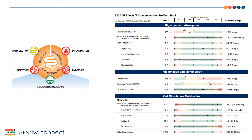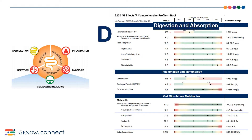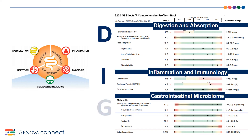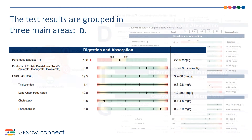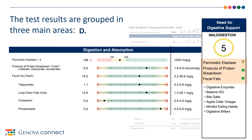Here we see the fourth page of the report laid out in the DIG framework: D for digestion and absorption, I for inflammation and immunology, and G for gastrointestinal microbiome. The first marker, pancreatic elastase, represents a series of chemicals or enzymes released from your pancreas into your small intestines that help to break down your foods.